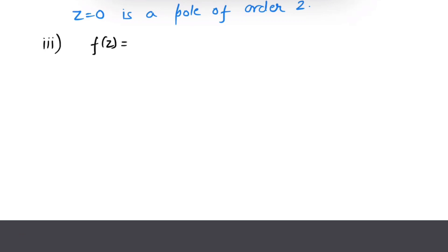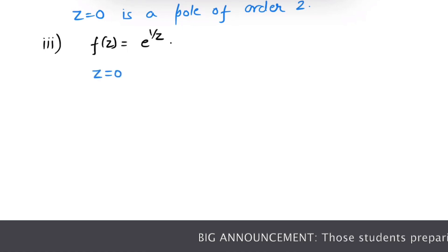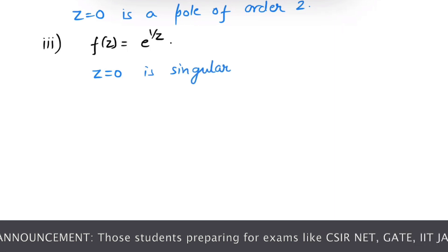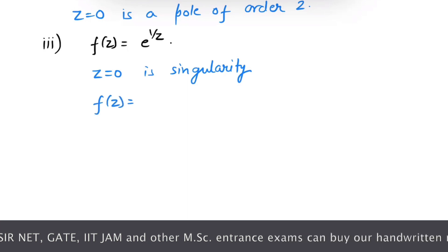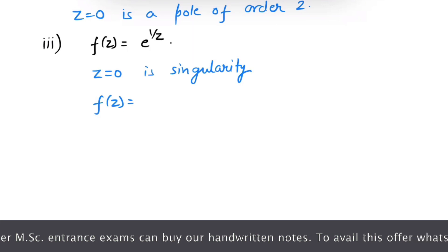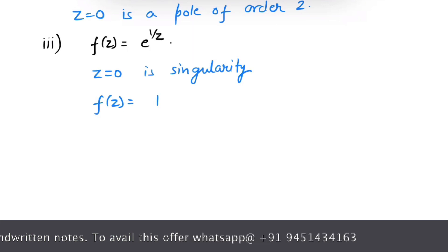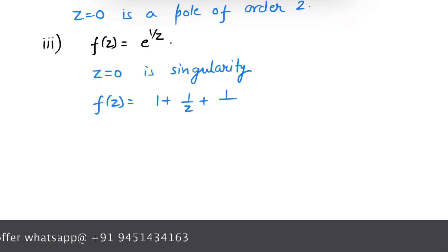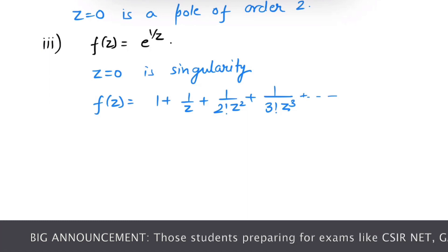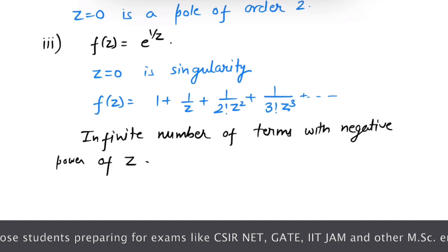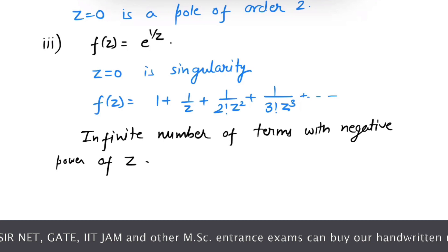Next example: f of z equals to e raised to power (1 over z), where z equals to 0 is the singularity. Writing the expansion: e raised to power (1 over z) equals 1 plus 1 over z plus 1 over factorial 2 times z squared plus 1 over factorial 3 times z cubed and so on. Here you can see there are infinite numbers of negative powers of z. Hence, by definition, z equals to 0 is an essential singularity.